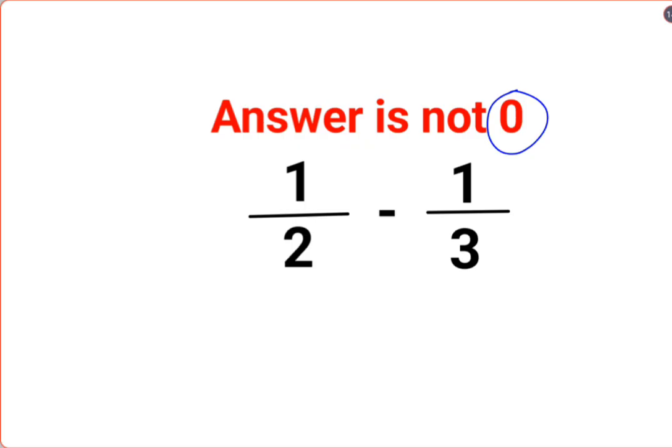The reason for that is you can only work on the numerators if your denominators are equal. Now how do I do it?